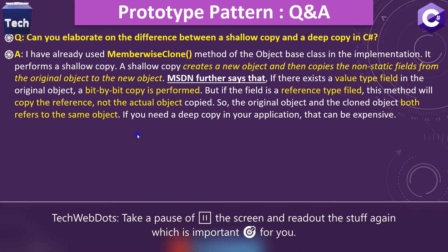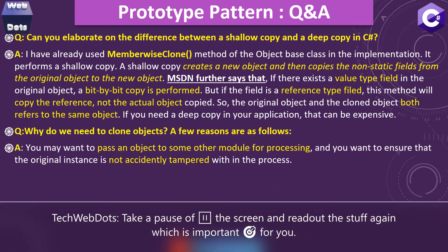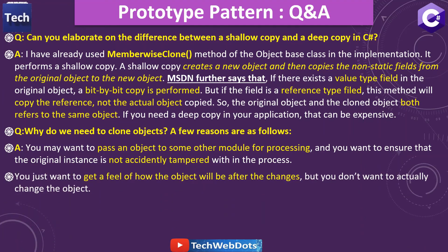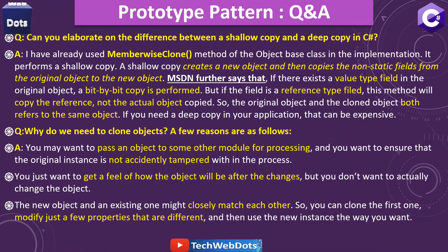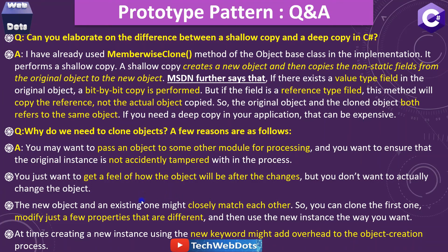Why do we need to clone an object? One reason is you may want to pass an object to another module for processing while ensuring the original instance is not accidentally tampered with. Another reason is you may just want to get a feel of how the object will look after changes without actually changing the original. A third reason is that the new object and an existing one might closely match, so you can clone and modify just a few different properties. Also, creating a new instance using the new keyword can sometimes add overhead to the object creation process.